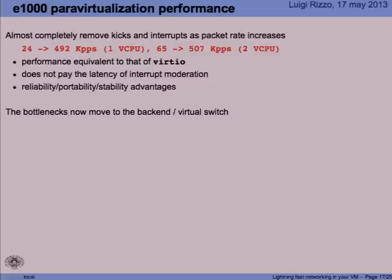Again, a very small change to both the guest and host side — about 100 lines each. The performance gains are also impressive in this case. In order to use para-virtualization, we don't need any interrupt moderation or send combining. You see that we approach half a million packets per second on FreeBSD, both with one and two virtual CPUs. So now we get to a level of performance which is perfectly equivalent to that of VirtIO, while using a more or less standard E1000 device driver.